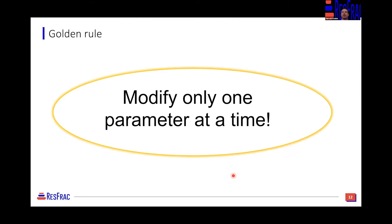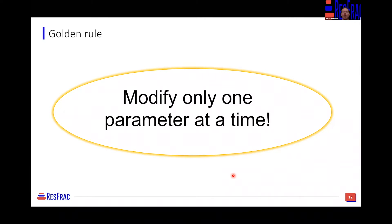As we consider the different facets of setting up a series of sensitivity analyses to look at cluster spacing, our guiding principle is the golden rule: modify only one parameter at a time. It's often very tempting to compare two different designs — say 3,500 pounds per foot at seven-foot cluster spacing versus 2,500 pounds at 30-foot cluster spacing. The challenge is that you're changing two parameters at once, making it very difficult to assign the benefit or detriment of that scenario to one parameter versus the other. So we focus on modifying only the cluster spacing, and not other parameters unintentionally.